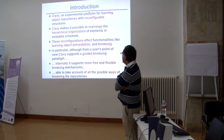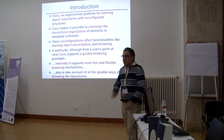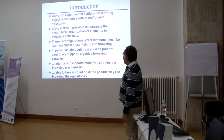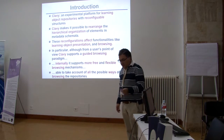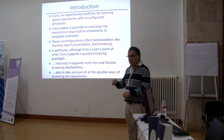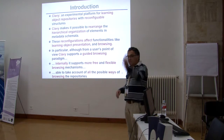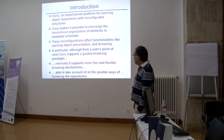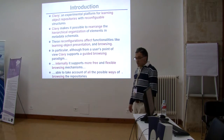CLAVI is an experimental platform for learning object repositories with reconfigurable structures. One of the main features of this platform is to support the dynamic reorganization of the metadata schemas, in the sense that it's possible to change the organization of the metadata elements in the schema, changing the place of these elements in the organizational tool. The reconfiguration of this schema affects different functionalities of the repository, such as learning object representation and also faceted browsing.